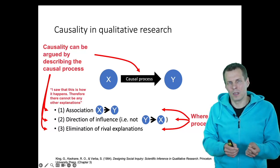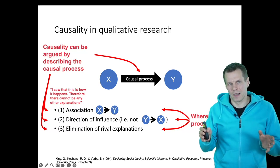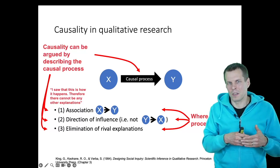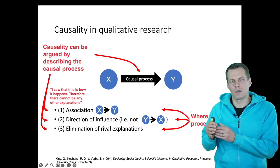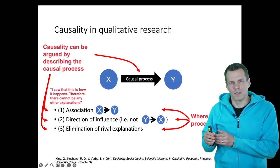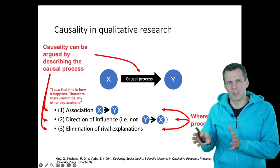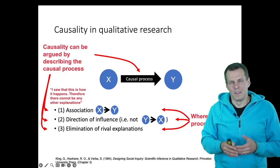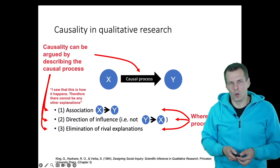The upside of quantitative research is that it allows more generalizable and rigorous tests, but you are far from the causal process and need many assumptions behind your analysis. In contrast, in qualitative research you can be fairly confident that you have correctly described the causal process — but if you only study four women-led companies, how certain can you be that your findings generalize to all women-led companies?